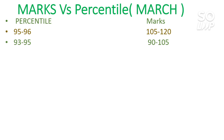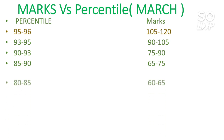For 93 to 95 percentile, you need 90 to 105 marks. SC/ST students targeting CS in any NIT can achieve this, and home-state candidates can get those NITs with even lower marks. For 90 to 93 percentile, you need 75 to 90 marks. For 85 to 90 percentile, marks should be 65 to 75, and for 80 to 85 percentile, marks would be 60 to 65.